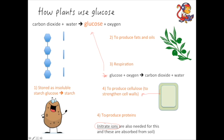So glucose and these nitrate ions are needed to make proteins. There are five different things that you need to know about how plants use glucose.